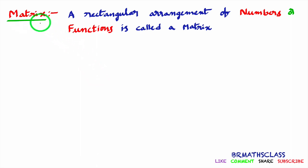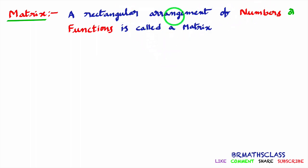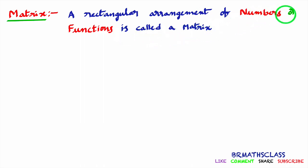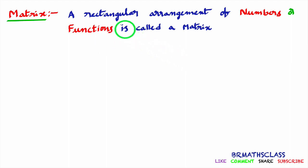What is the definition of matrix? A rectangular arrangement of numbers is called a matrix. I have written numbers or functions here — I will explain functions when I am writing the examples. Now we will try to understand what this rectangular arrangement of numbers means with an example.